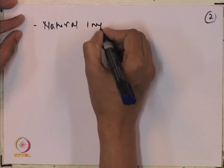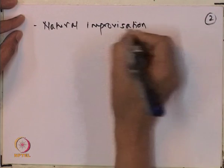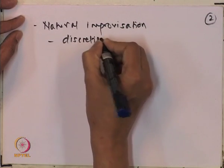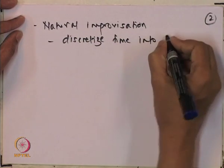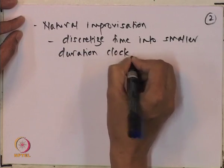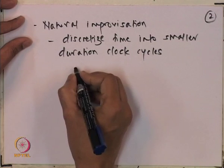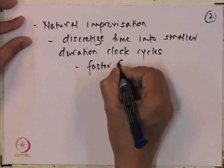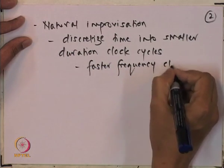So that is what we want to overcome. The natural way to improvise is to use smaller chunks — to discretize or quantize the time into smaller duration clock cycles. That means a faster clock, at a faster frequency.